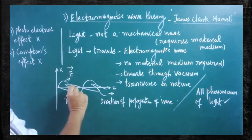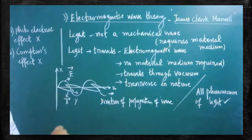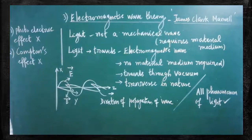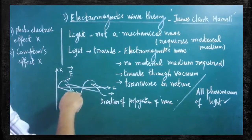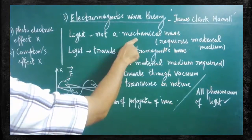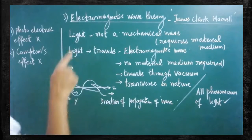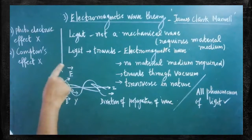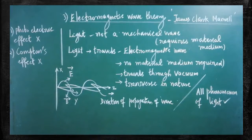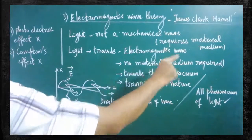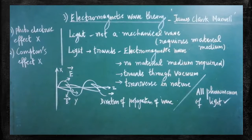This idea was proposed by James Clerk Maxwell. After the introduction of electromagnetic wave theory, we have to understand that light travels in the form of electromagnetic waves, not mechanical waves. Maxwell also insisted that electromagnetic waves do not require any material medium — they are capable of traveling even through vacuum.